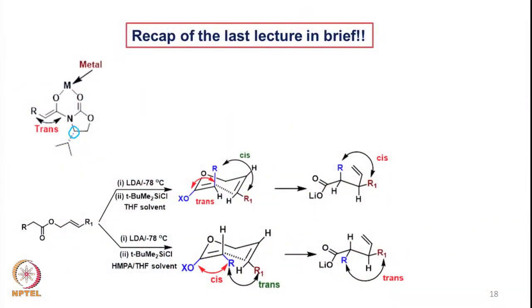Hello everyone, I welcome you all for today's class. We will briefly look at what we discussed last time and then proceed further. In the last class, we saw how the oxazolidinones were used for the formation of Z-enolate and how the Z-enolates are then allowed to react with the alkylating species. The oxazolidinones are basically derived from different amino acids, and the configuration of the substituents on the auxiliary — such as the isopropyl group — determines the orientation of the incoming electrophile when the enolate is reacting with the electrophilic species.